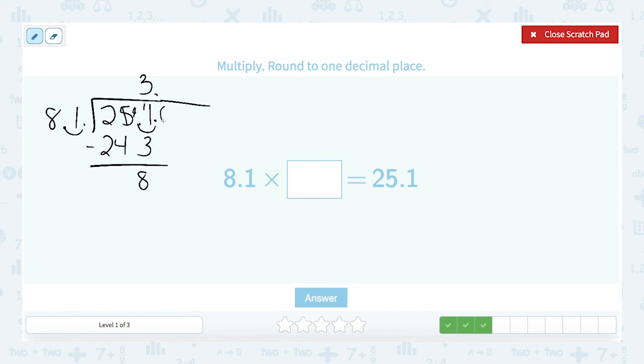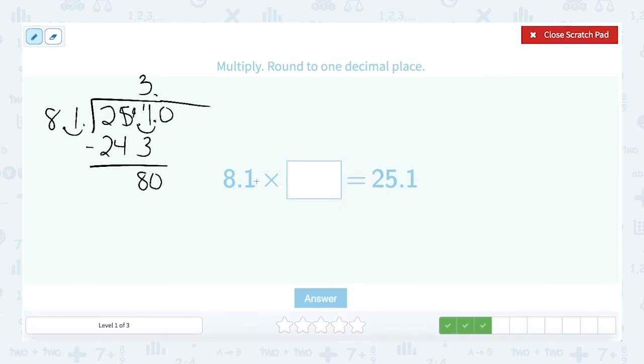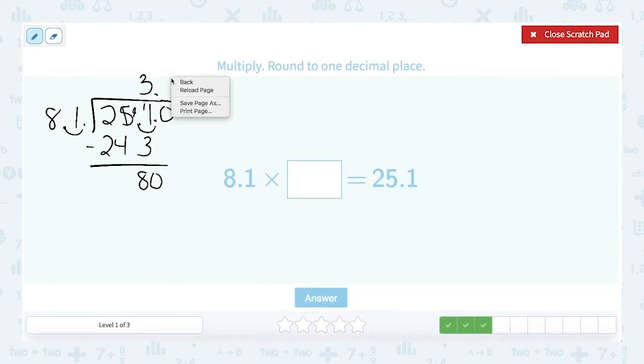Now, same as we did the last time, we add a 0 and bring it down. Oh, 81 does not go into 80. So it goes in there 0 times. Don't forget to put that 0 in. Sometimes students forget to do that. Now, we'll do 0 times 81. That's just 0. So when we subtract, we just stay with 80. And we add another 0 and bring it down.